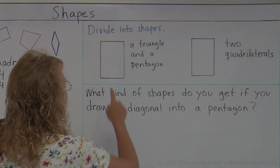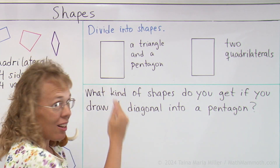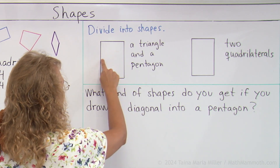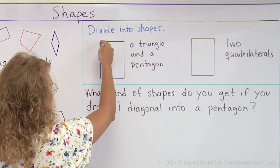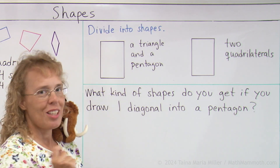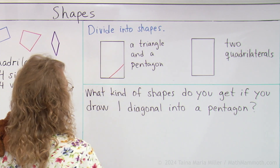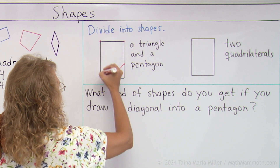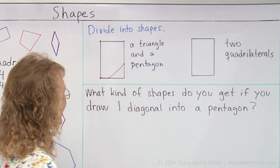Here I have a simple rectangle. Divide it using one line so that you will get a triangle and a pentagon. For example, one line here would not give me any triangle, so that won't work. And a line from corner to corner would give me a triangle and a triangle, so that won't work either. But let's try this — now I have a triangle here, and then this other shape has one, two, three, four, five corners. Five corners — so that solves it, that's a pentagon.